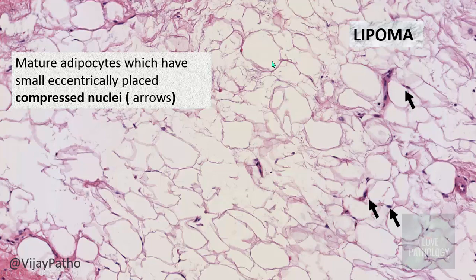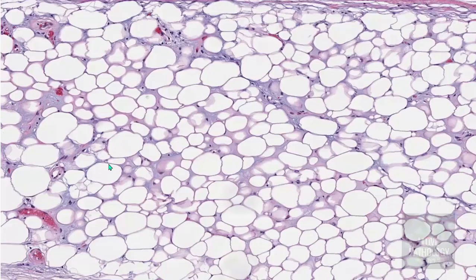These sections are from a particular plane, so when the section passes through the plane where nuclei are present, you can identify them. Otherwise, all you see is just a membrane-bound empty space. Lipomas are composed of mature adipocytes, and when nuclei are present they are eccentrically placed, short, small, and compressed. In between, you can find delicate fibrovascular septa. You have to demonstrate the presence of a thin capsule.